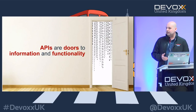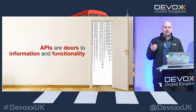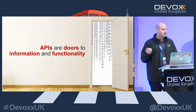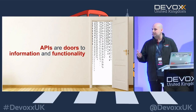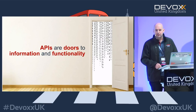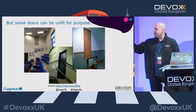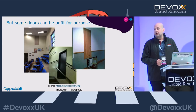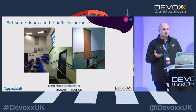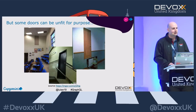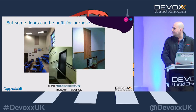APIs are doors — we all know that. They give us access to information and functionality. Without APIs, it would be difficult to have omnichannel applications like mobile apps. But what happens when your door is not fit for purpose? It's kind of difficult to use it, and that's kind of the point.